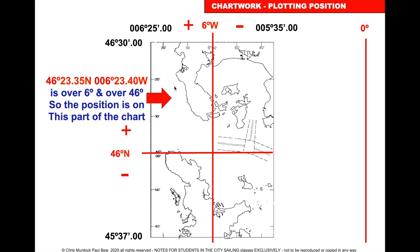Fold chart 3 in half and look at the top left-hand corner. You will see that the latitude scale on the side reads 46 degrees, 10, 20, and so on, and the longitude scale reads 6 degrees, 10, 20, and so on.